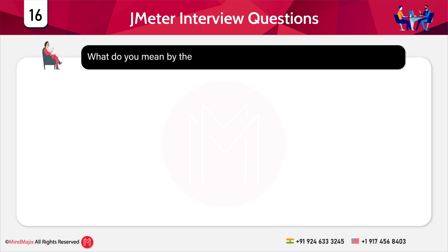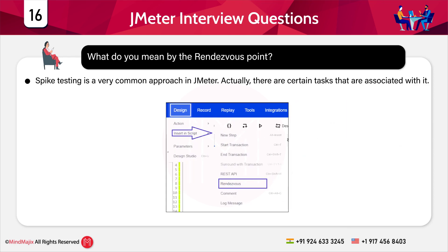The next question is: what do you mean by the rendezvous point? Spike testing is a very common approach in JMeter. The prime task of the rendezvous point is to manage spike testing without creating any problem. The synchronizing timer is used along with it to perform this task. You need to wait until all active users reach a value that is assigned during the load test.